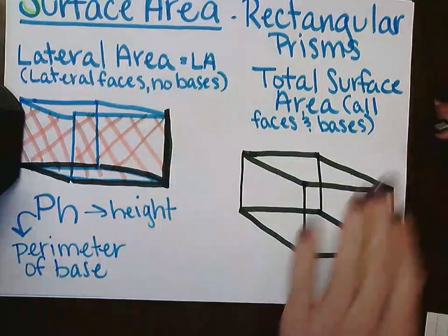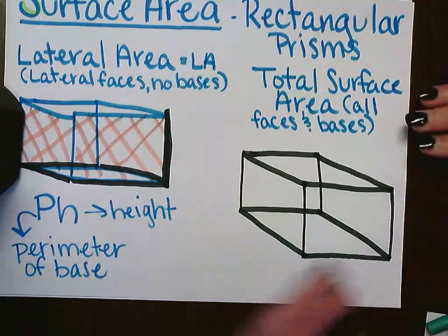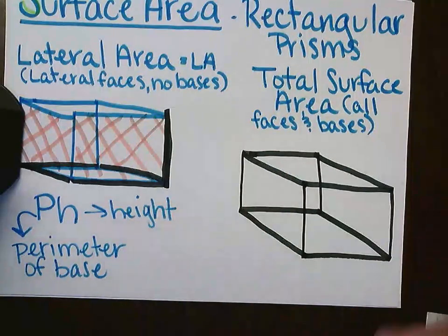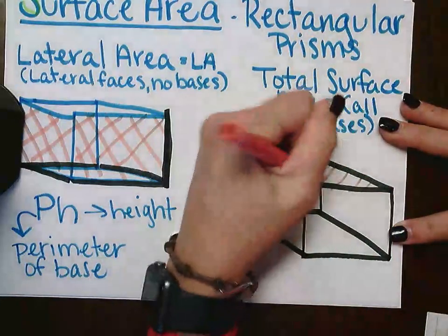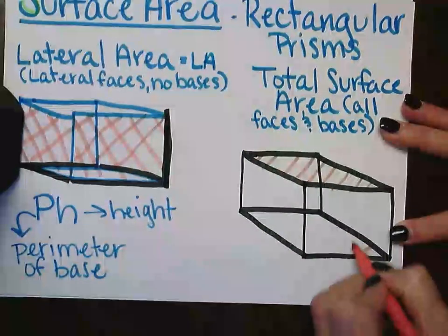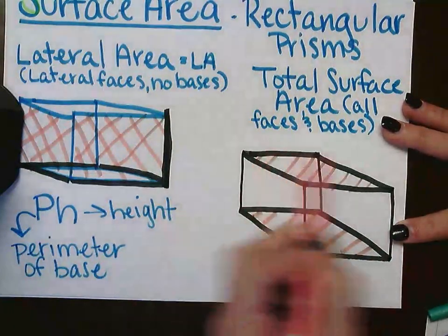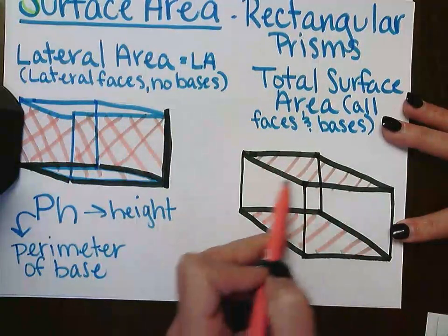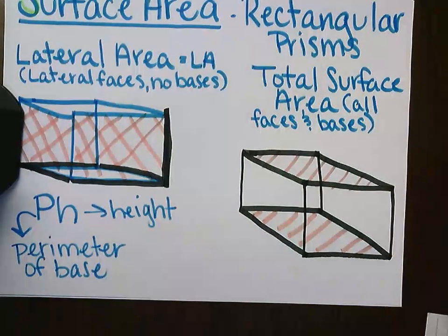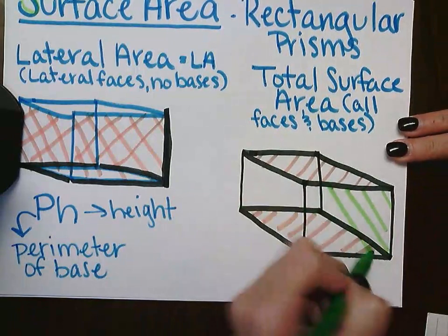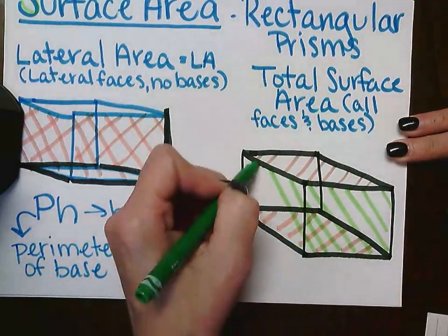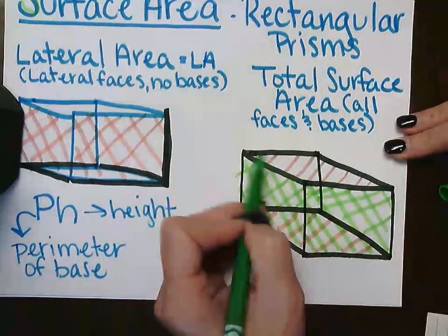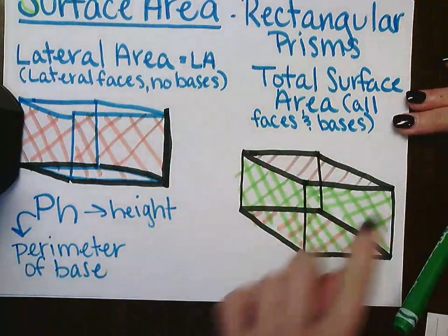If we wanted the whole surface area, this is like wrapping a present — how much paper would it take to wrap the whole thing? We wrap the top, the bottom, and all the sides. Here are the bases, and then here are all of our other faces. We want to know the area of all of it.